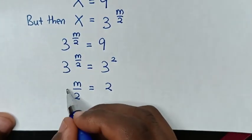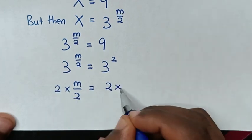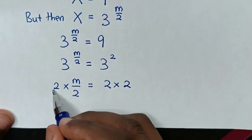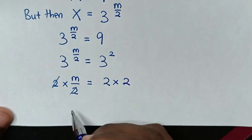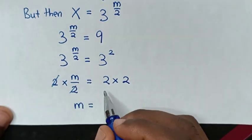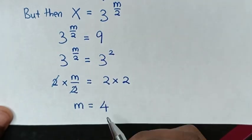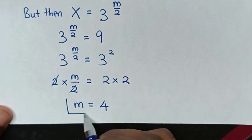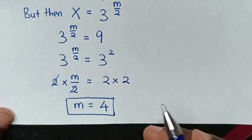Then we multiply by 2 on both sides. This two and this two cancel, so m is equal to 2 times 2, which is 4. Therefore, this is the final answer: the value of m is equal to 4.